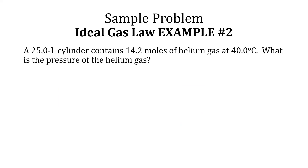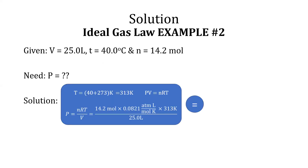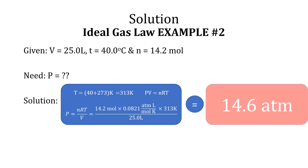Ideal gas law example two: a 25.0 L cylinder contains 14.2 moles of helium gas at 40 degrees Celsius. What is the pressure of the helium gas? Given V equals 25 L, T equals 40 degrees Celsius, and N equals 14.2 moles, we solve for P. First, convert 40 degrees Celsius to Kelvin by adding 273 for a final temperature of 313 K. Using the ideal gas law, P equals NRT divided by V. Plugging in all values, including R equals 0.0821 L·atm/mol·K, P equals 14.6 atm.